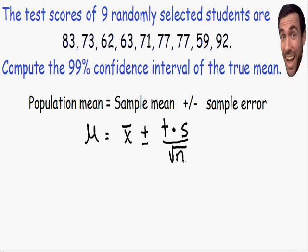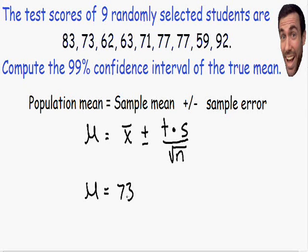This formula looks almost exactly the same as when we use z. So let's plug everything in. The population mean equals the sample mean — to find the sample average we add all the scores and divide by 9. I already did this and it equals 73. This is plus or minus the t value, so now we need to find the t value for a 99% confidence interval using a t table.